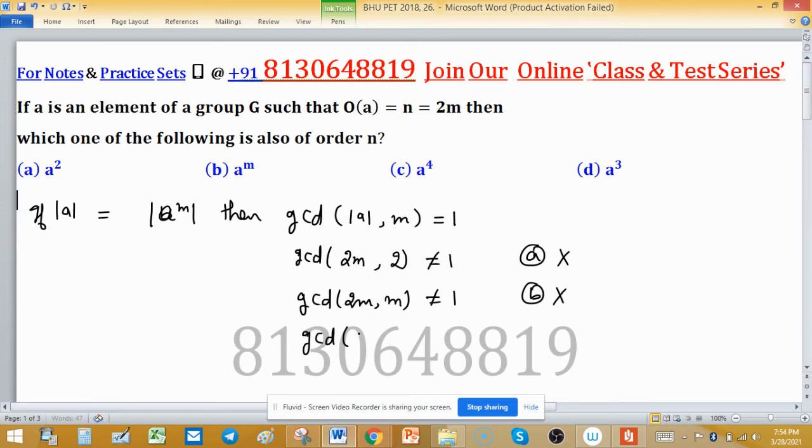Similarly, GCD of 2M with 4 is not equal to 1 because 2 is common factor. So option C is also discarded here.